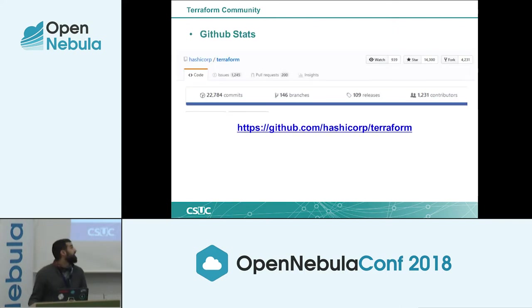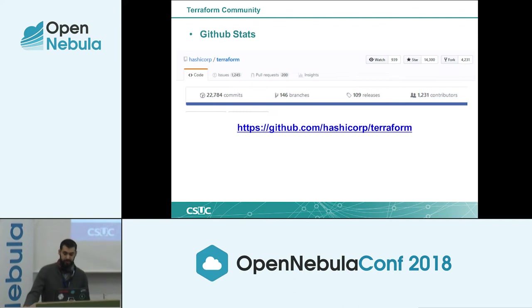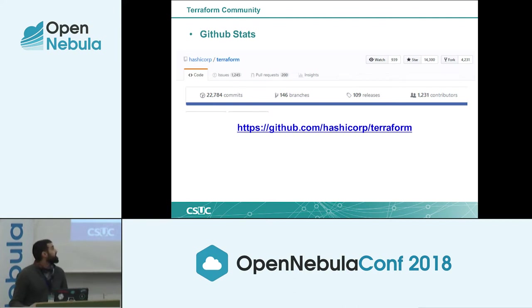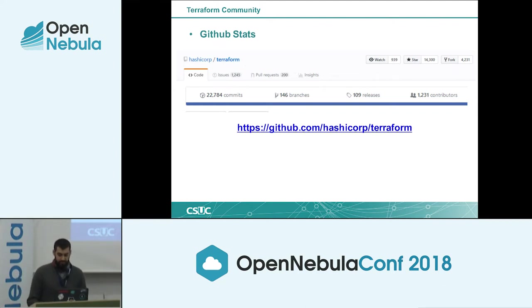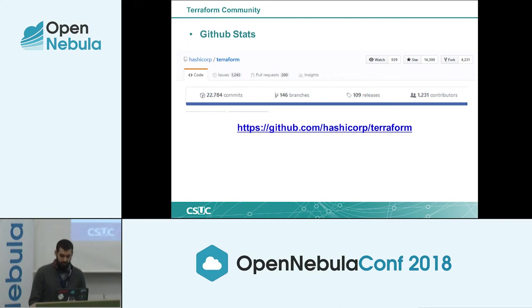As you can see, Terraform has a strong and active community behind it — it has 109 releases and more than 1,000 contributors. It's created by HashiCorp, the same company that owns Vagrant and Consul.